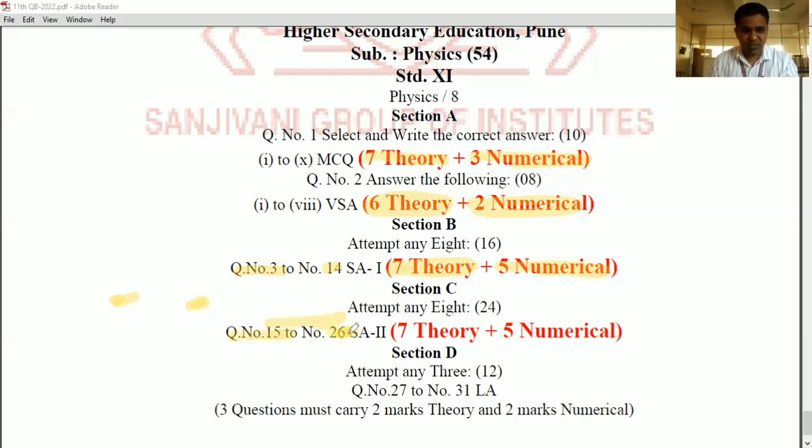Now see, question number 15 to 26, short answer type two, each question carry three marks. Again, there are seven theory questions and five numerical. That means even if you solve theory, you will get seven, these are 21 marks from section C and from section D you have to attempt any three questions. And out of that three questions must carry two marks theory and two marks numerical.